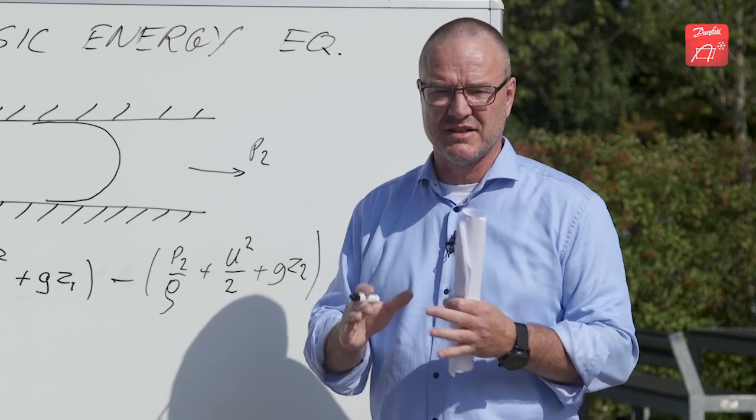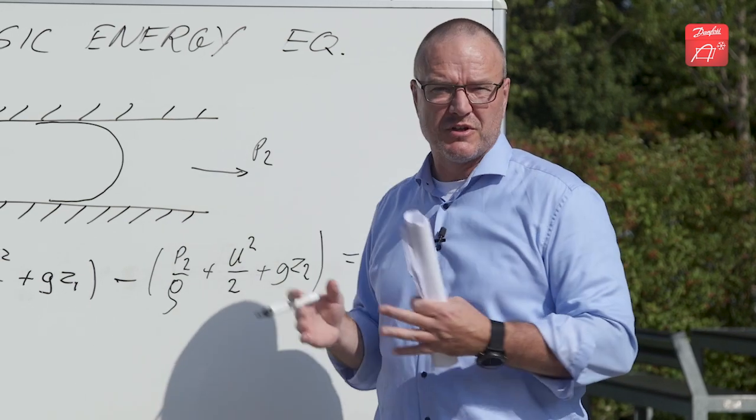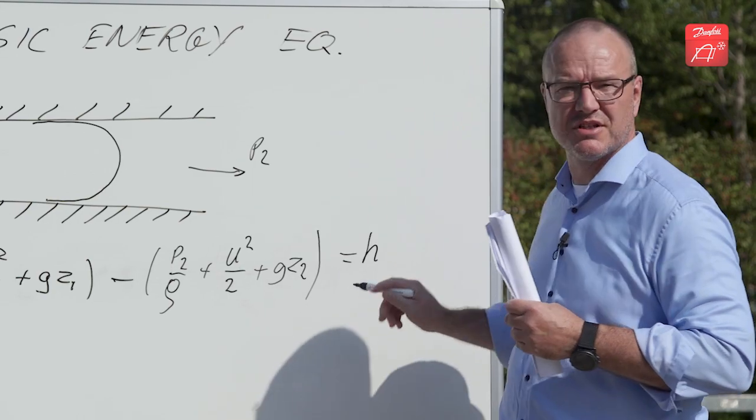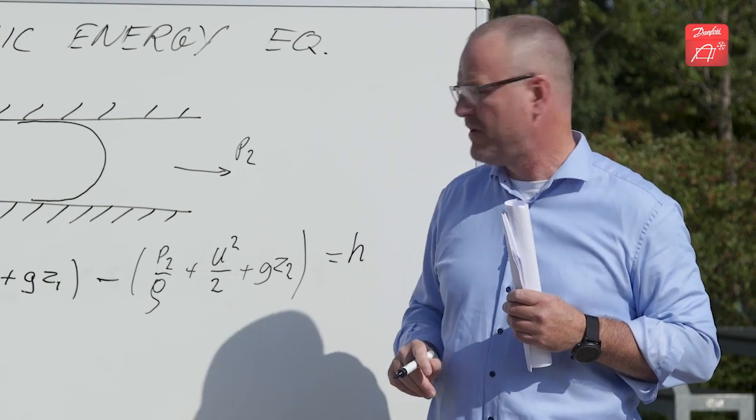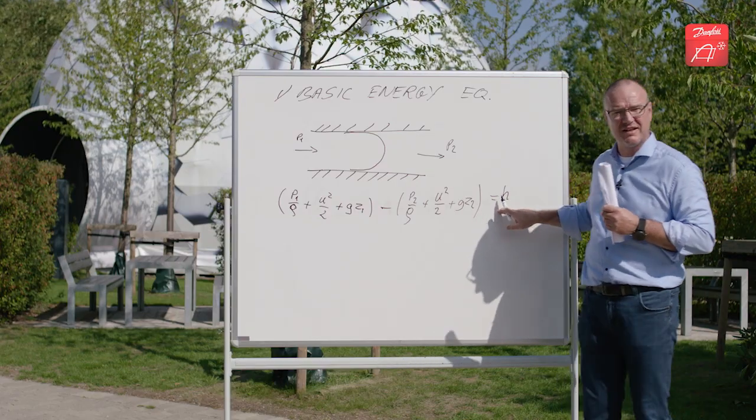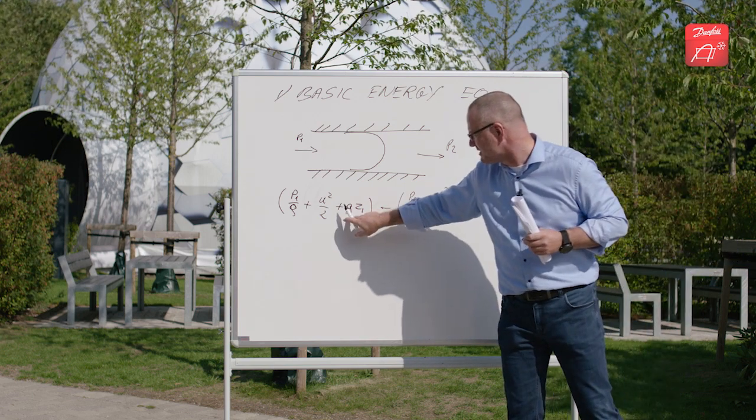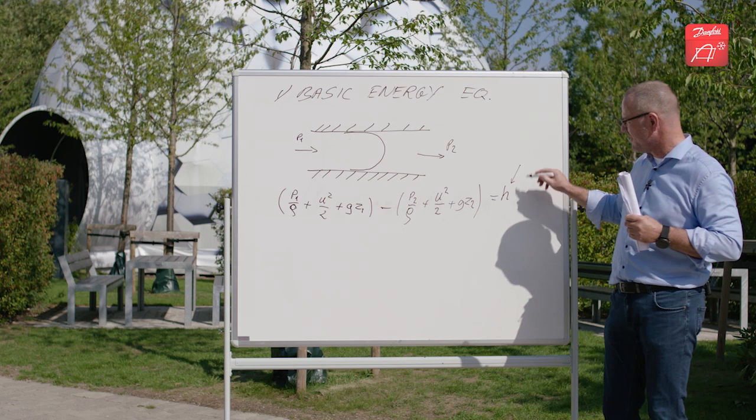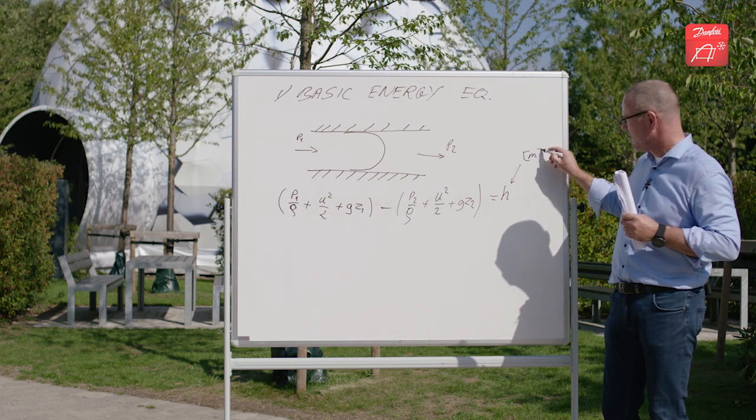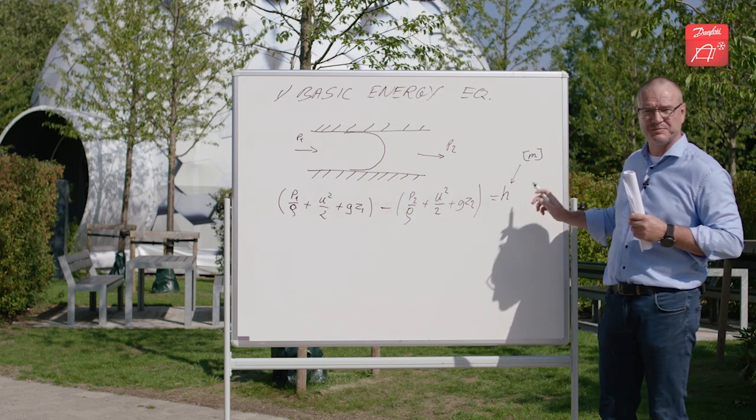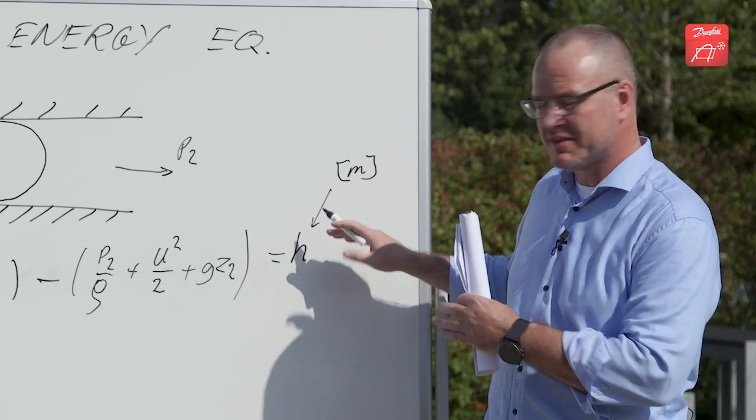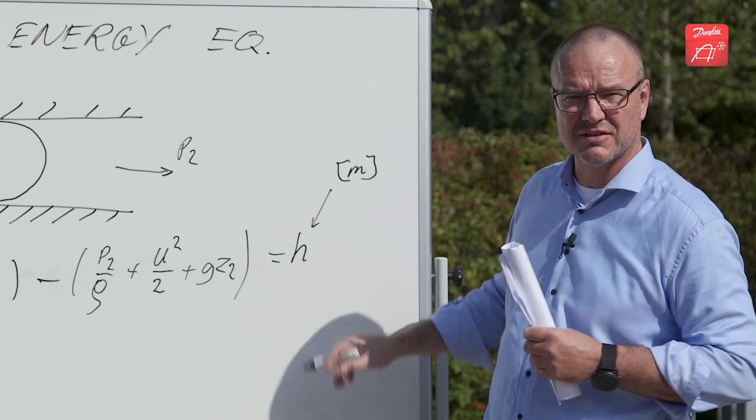And we collect all of these losses, and in this case it will specifically be friction losses, into a term we call H for the head loss. The reason it's called head loss is that if you divide this equation by the gravity, this value here will take the units meters. So from old fluid mechanics and fluid dynamics, you call that a head loss.